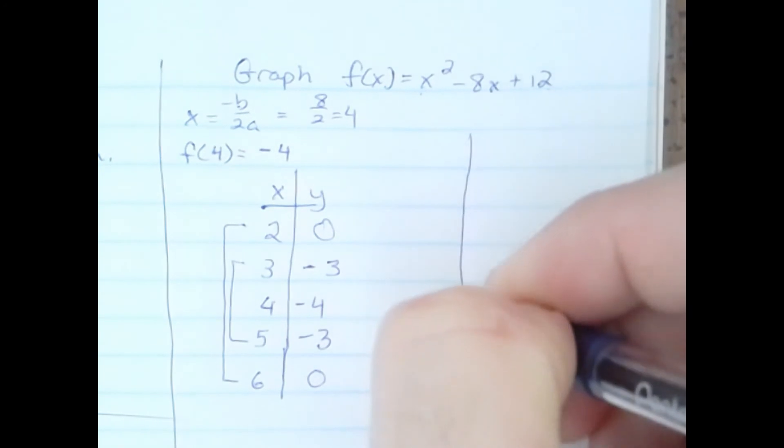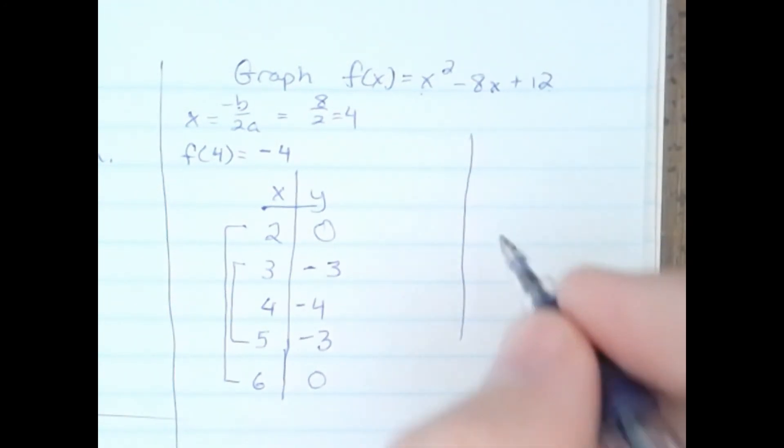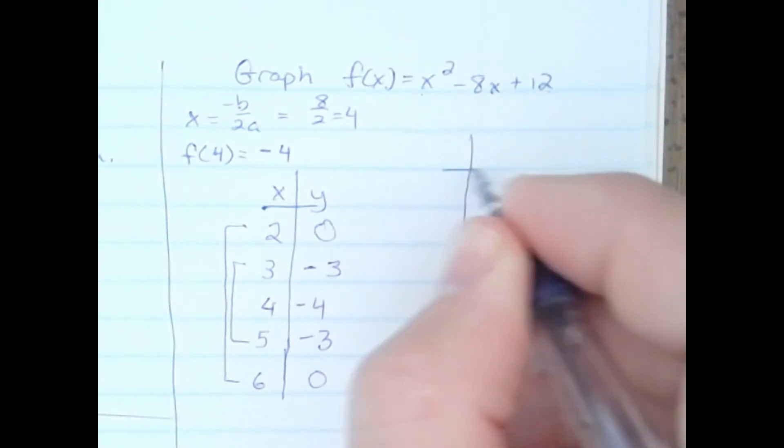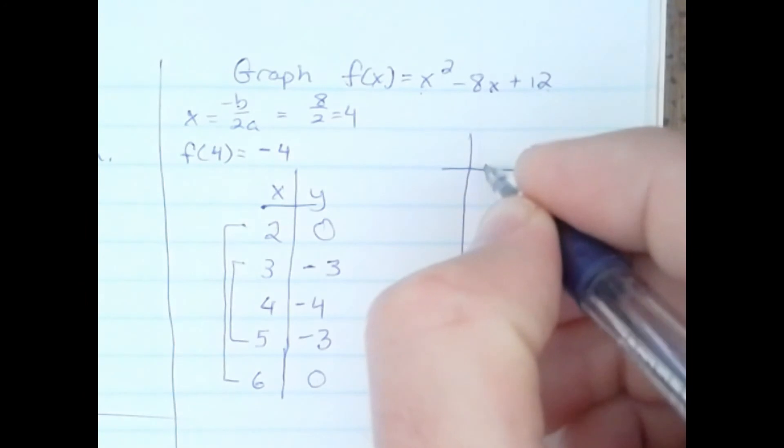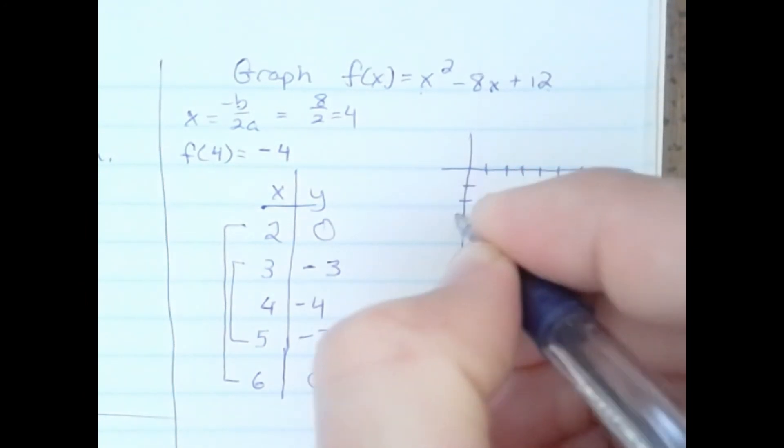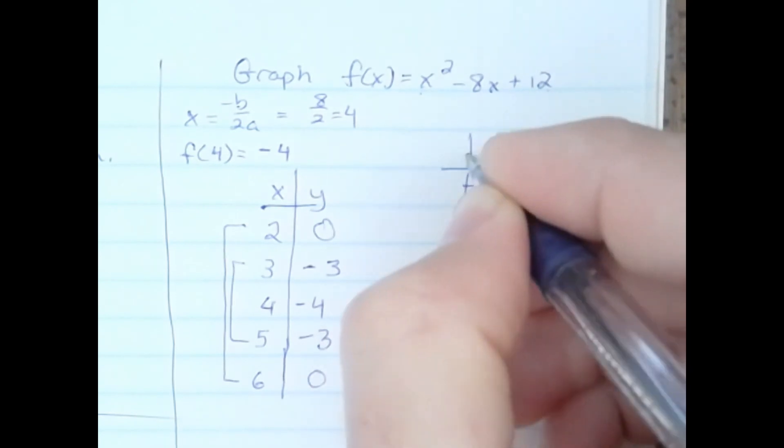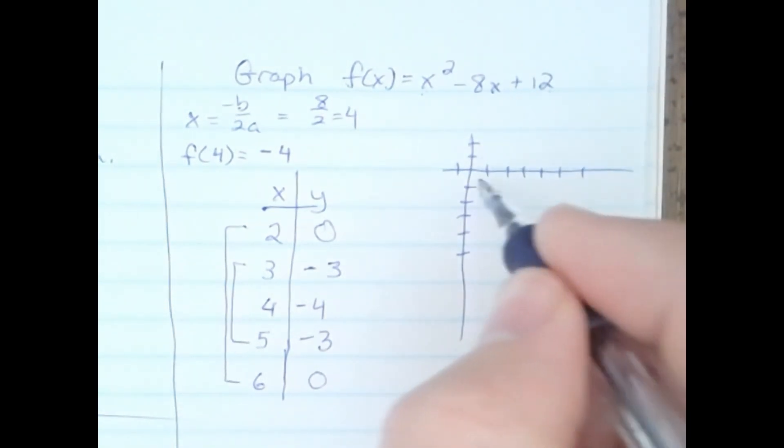Now we have 5 points from which to graph. I'm going to skew the graph a bit so we can fit all the points in nicely. Let's plot our vertex first. Right 4, down 4.